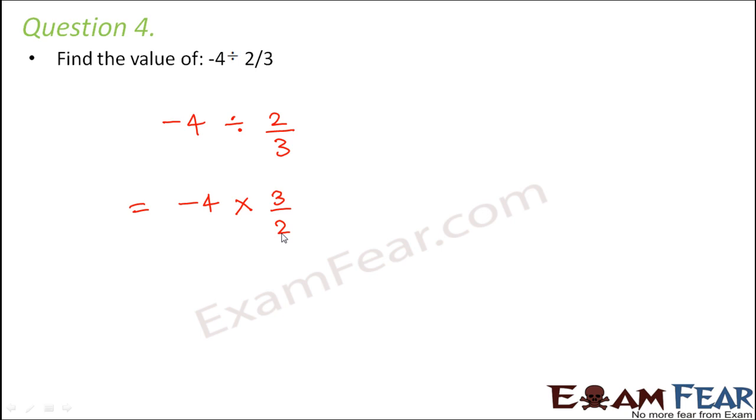So just interchange the numerator and the denominator. So here this is a simple multiplication. -4 is -4/1. Multiply the numerators. This would give you -12. Multiply the denominators. That would give you 2. So this would be 2, 6 into 12. So the answer would be -6.